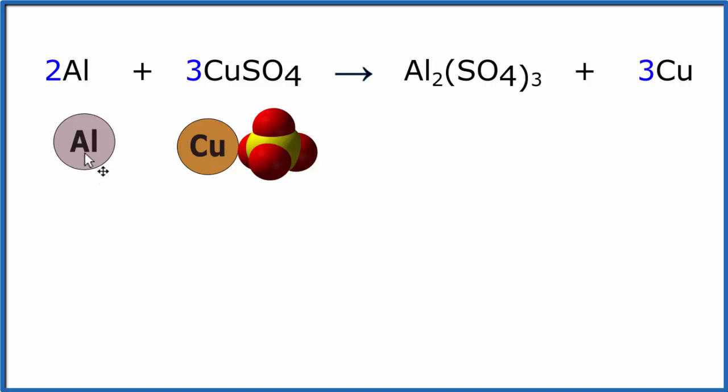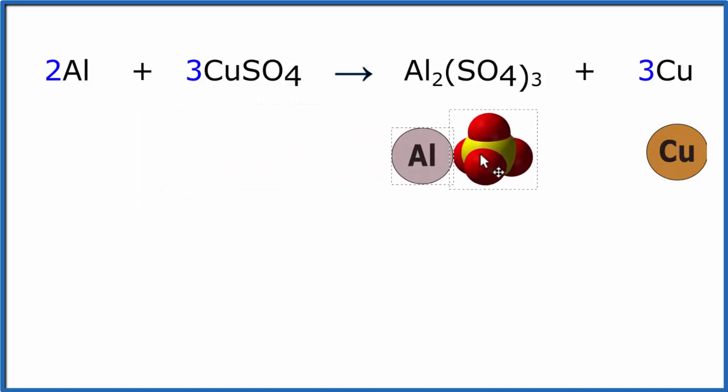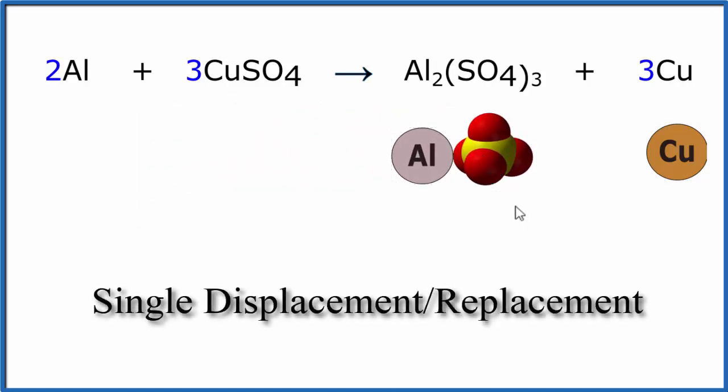So the aluminum is going to come in and displace or replace the copper. Essentially it switches places with the copper. The copper now is just solid copper, and the aluminum here is bonded to the sulfate. That's the aluminum sulfate. So this is a single displacement reaction, sometimes called a single replacement reaction.